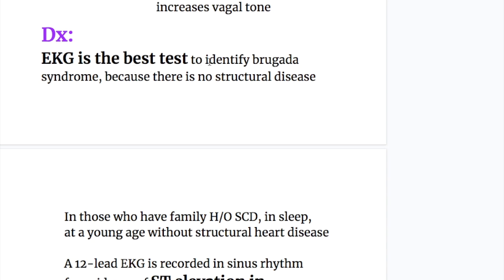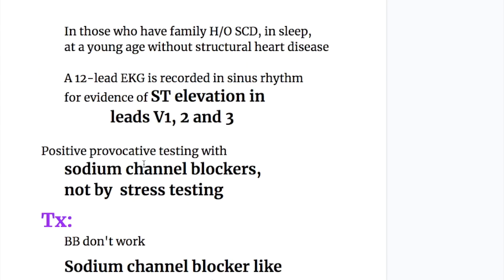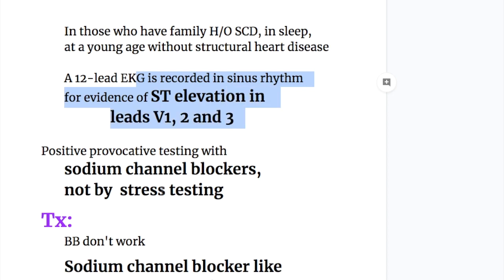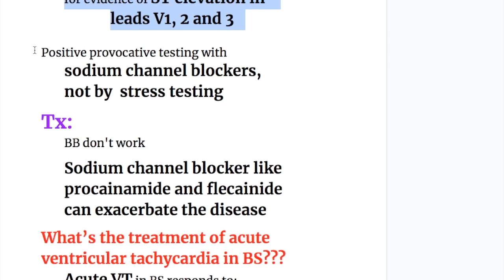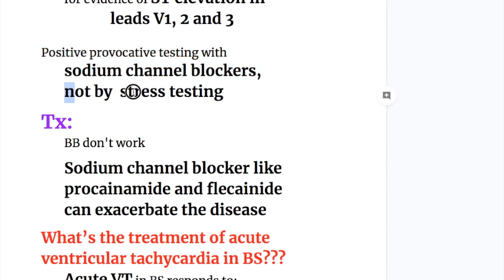The EKG is the best test to identify Brugada syndrome since there is no structural disease. In those who have a family history of sudden cardiac death, especially during sleep at a younger age without structural heart disease, a 12-lead EKG is recorded in sinus rhythm for evidence of ST elevation in leads V1, V2, and V3. A positive provocative test with a sodium channel blocker is also done; stress testing is not used.